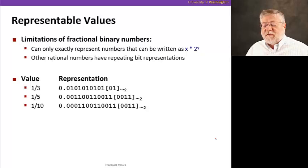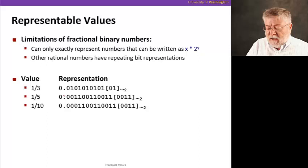Other rational numbers are going to have repeating bit representations. So for example, remember like one-third in decimal is .33333, but it never stops. It goes on forever. Well, we have an equivalent situation with binary numbers. So let's take a look at the representation for one-third, in fact.